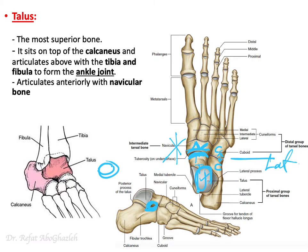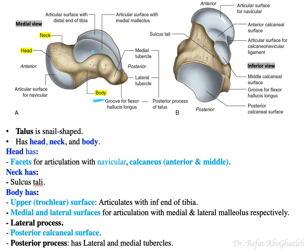The body articulates with the distal end of tibia, the medial malleolus of tibia, and the lateral malleolus of fibula — giving three facets or articular surfaces. The facet for the distal tibia is called the trochlea, and there is the facet for the medial malleolus and another for the lateral malleolus of fibula.